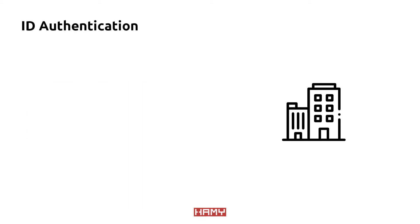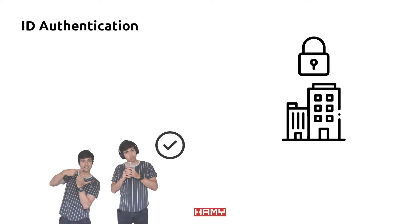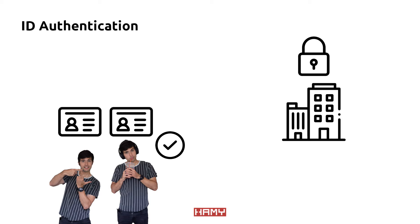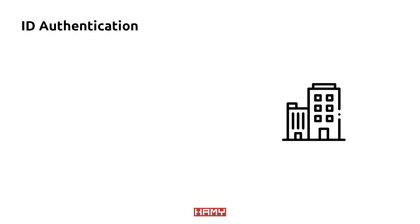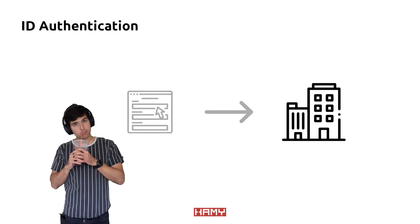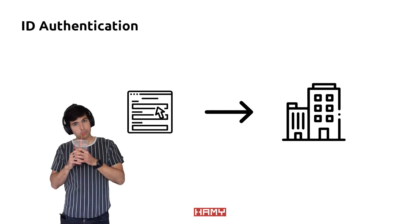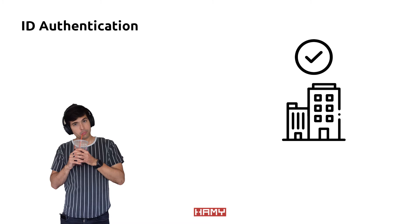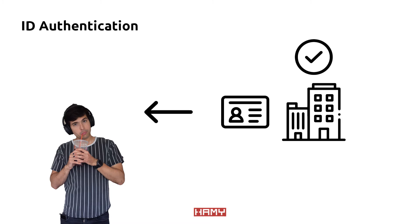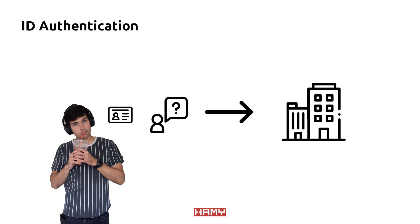Let's say an organization wants to restrict access to some of its resources — they only want members to be able to access them. To identify members, they will issue each member an ID card. We'll call this ID-based authentication. When a person joins the organization, they will hand over information proving who they are. The organization will then verify that information and issue an ID card that uniquely identifies them if everything checks out. The next time the person wants to access a restricted resource, they can present their ID card for verification, and the organization can check the ID to make sure it's real and that the person has access to the resource.